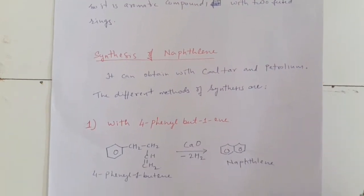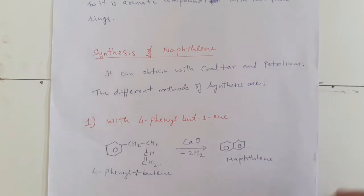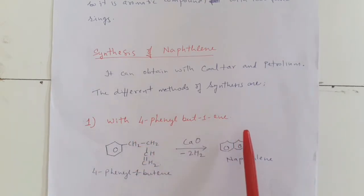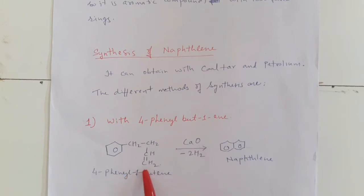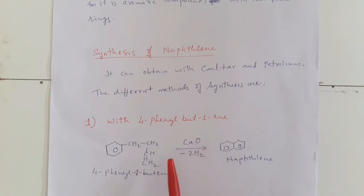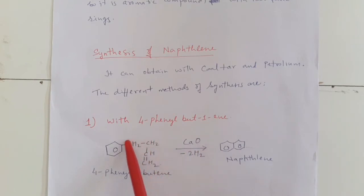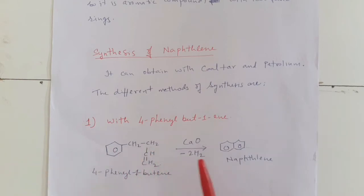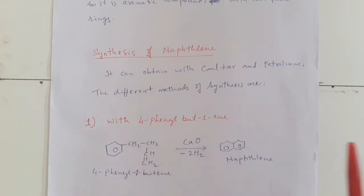Synthesis Number 1: With 4-phenyl but-1-ene. The compound 4-phenyl-1-butene, when passed over heated calcium oxide, two molecules of hydrogen are removed and we get naphthalene.